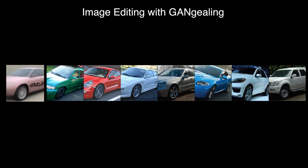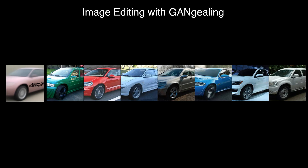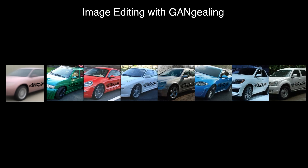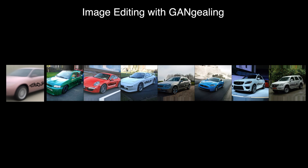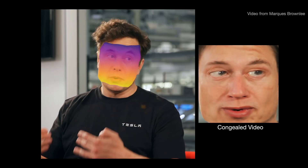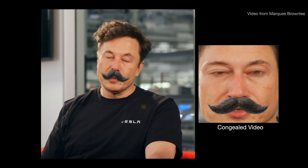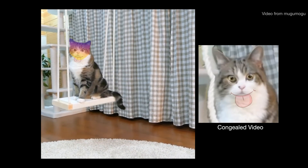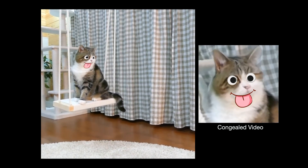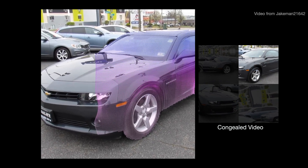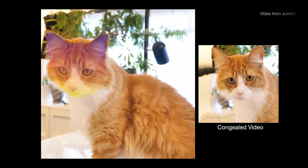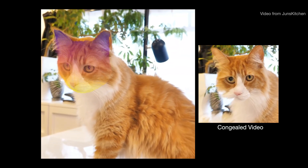Here are our results adding a decal to our average congealed car image. A surprising result of GANGEALING is that our spatial transformer works well when applied per frame to videos without leveraging any temporal information whatsoever. This can be used to do single-object dense tracking to power various mixed reality applications like object filters. In all cases, we always propagate annotations from our average congealed image — by annotating that single image once, users can propagate their edits to as many videos as they like without any additional annotations required.